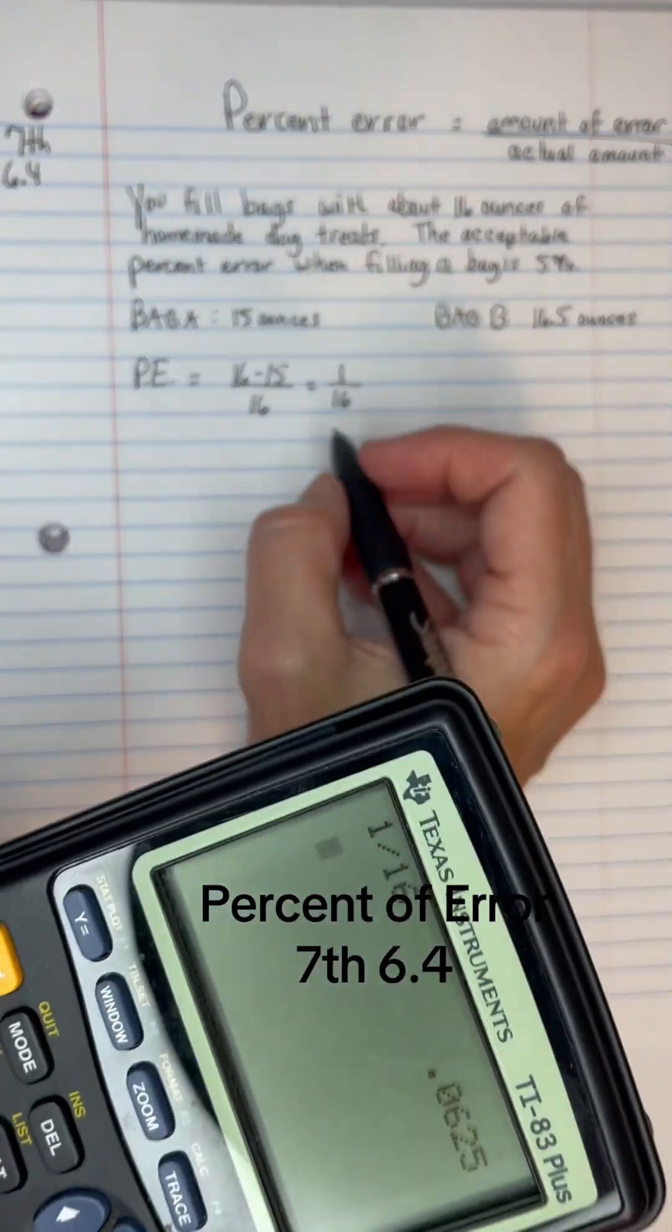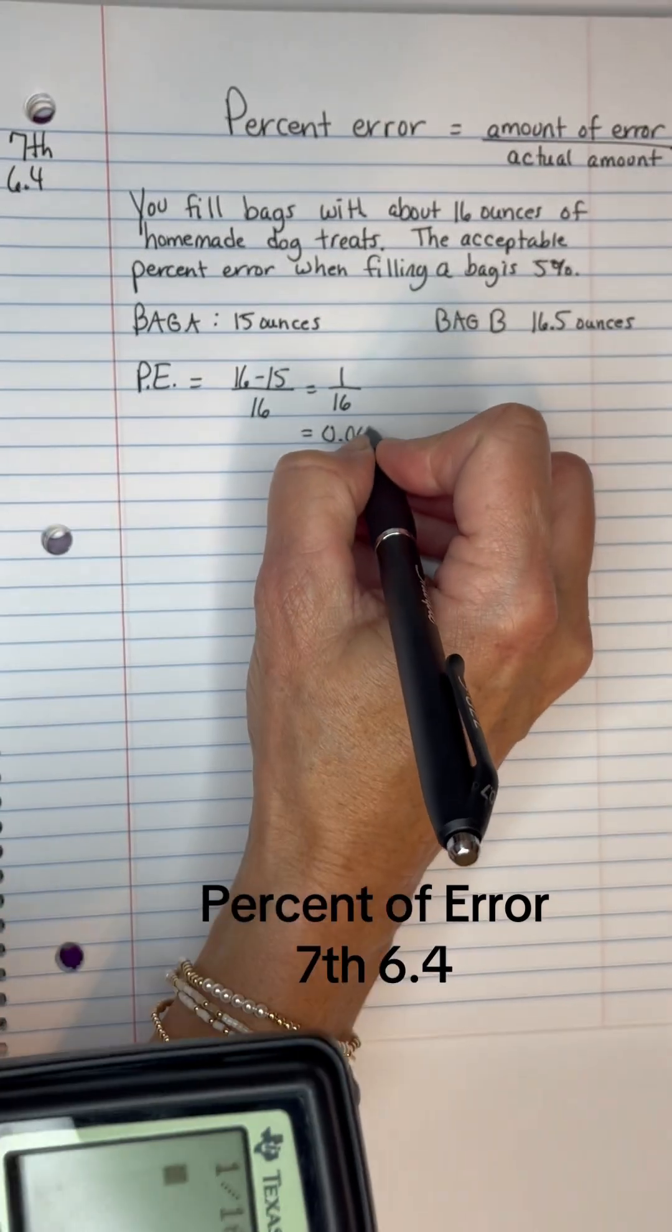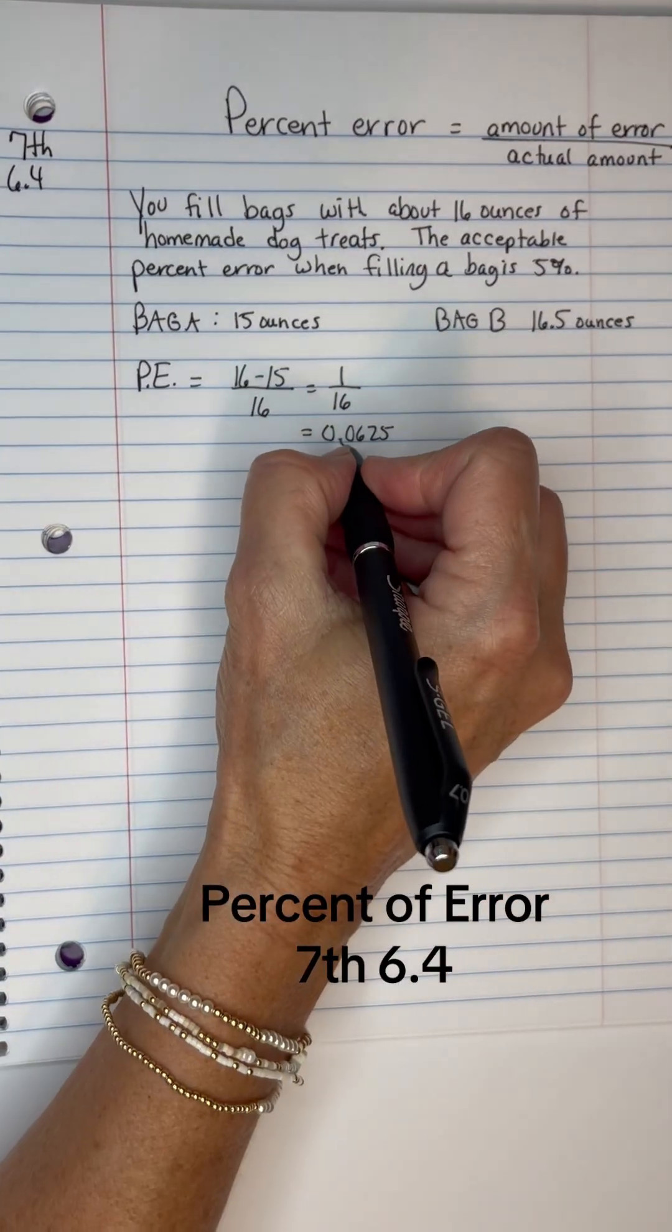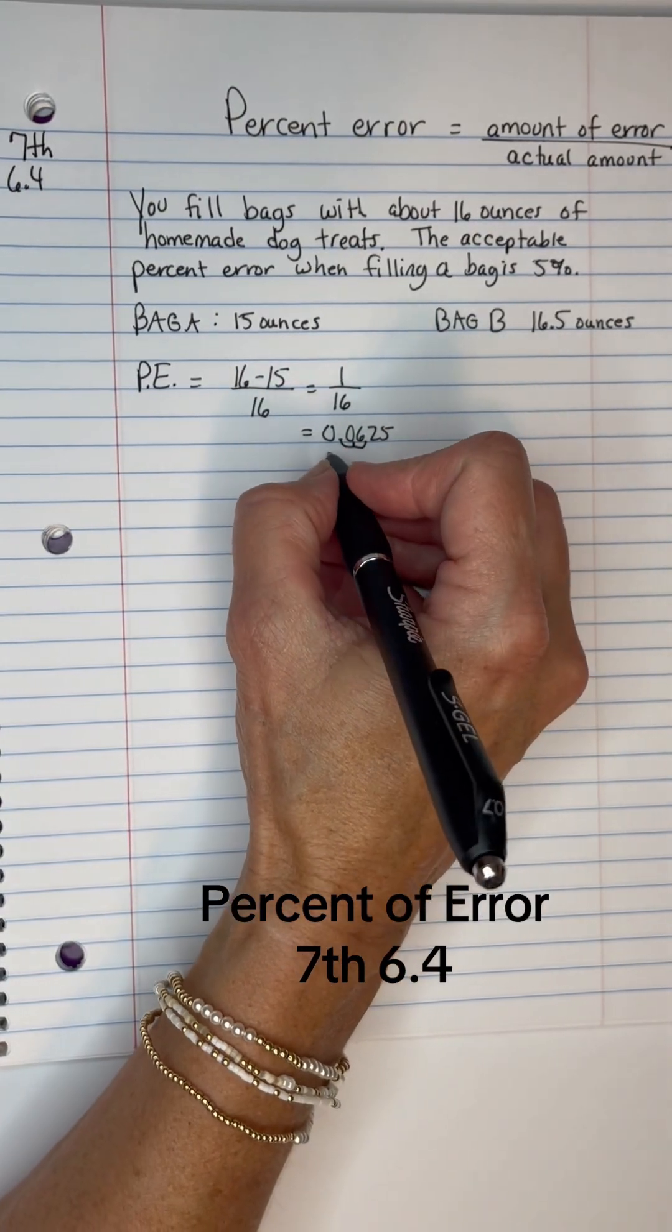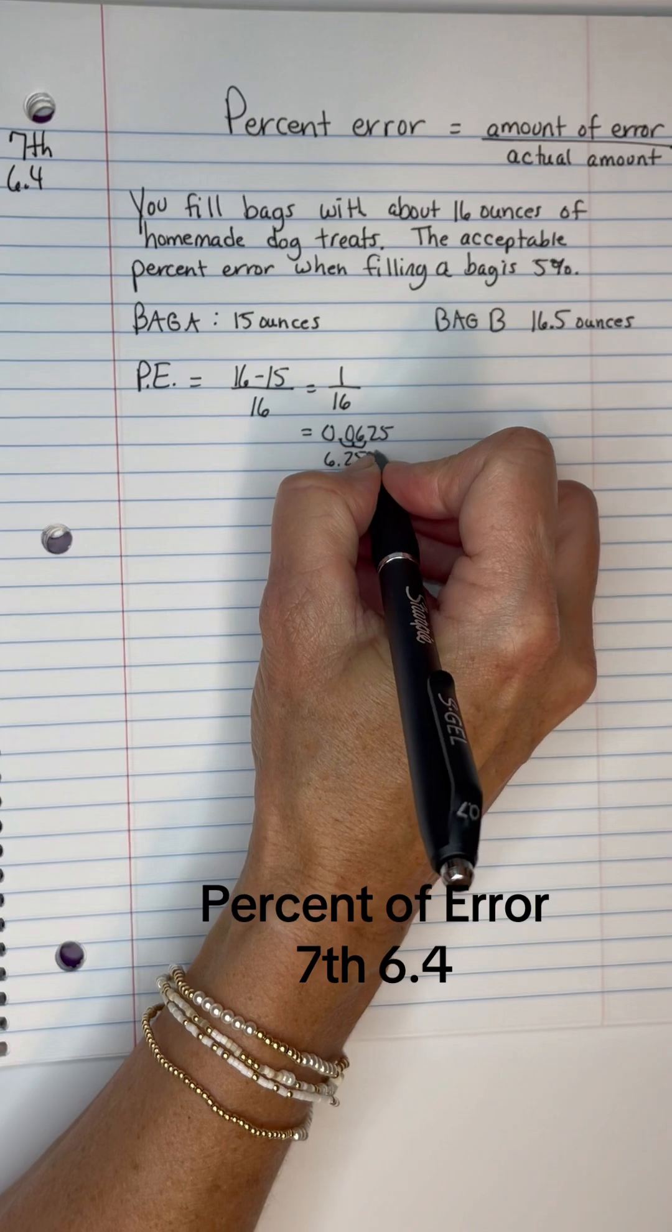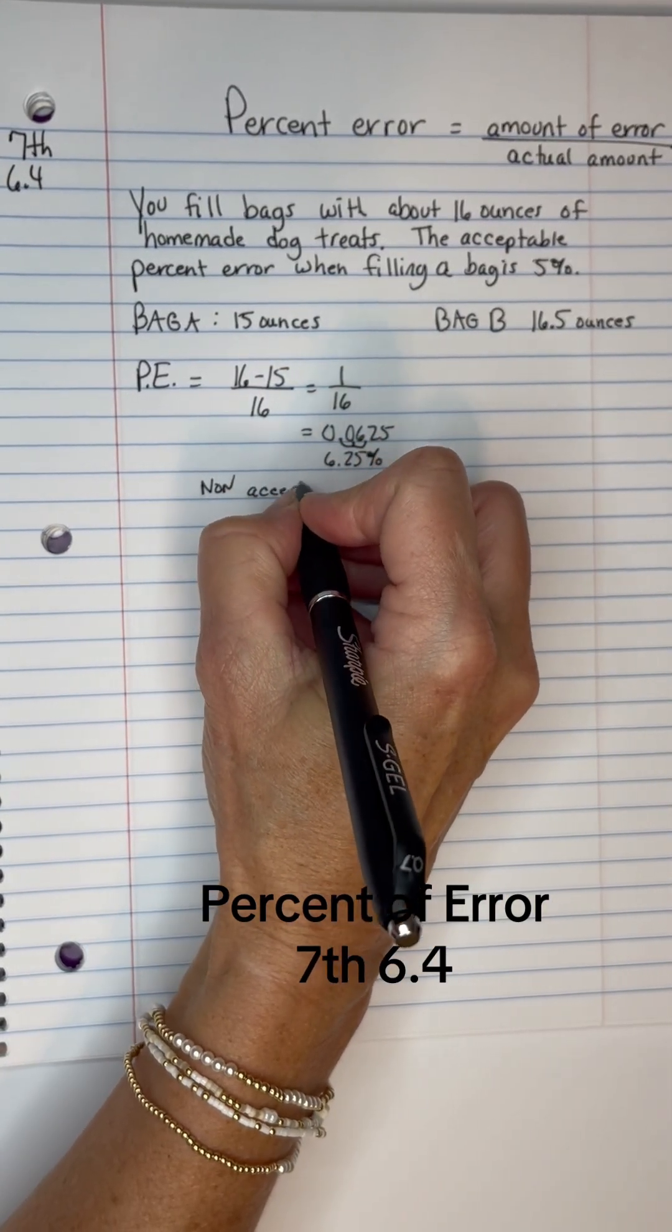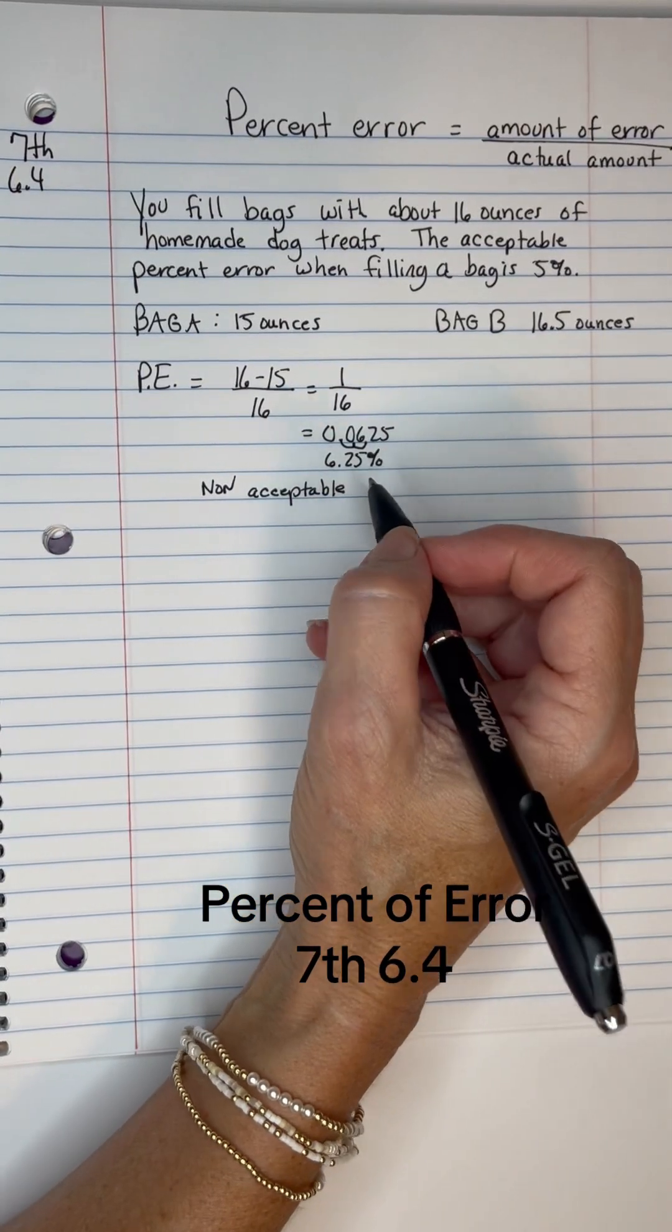And that's going to be 0.0625. And if I turn that into a percent by moving the decimal two places to the right with the Dr. Pepper rule, that's 6.25%. This is not acceptable. You would feel like you were being cheated out of product if you bought this one.